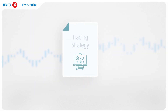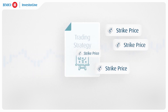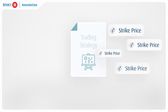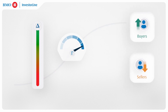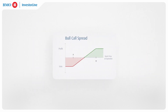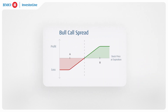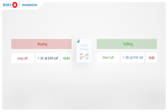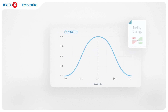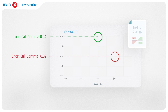Gamma's insights extend beyond mere sensitivity to underlying movements — it's instrumental in strike selection and strategizing around options. A higher gamma accelerates delta's journey to its destination, benefiting option buyers while being less favorable for sellers. Consider a bull call spread as an example, with XYZ Corporation at $100 per share, buying one XYZ call option with a 100 strike price and a gamma of 0.04. Recall that gamma is centered around at-the-money options, meaning the long call with the 100 strike will have the highest gamma, as it is at the money.